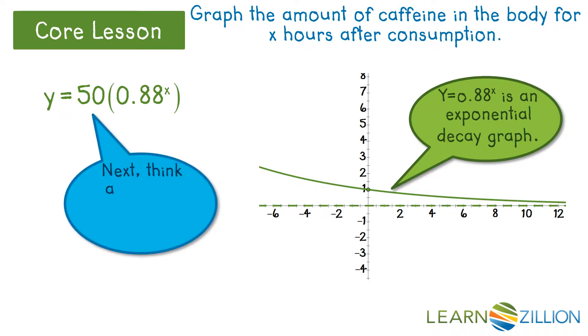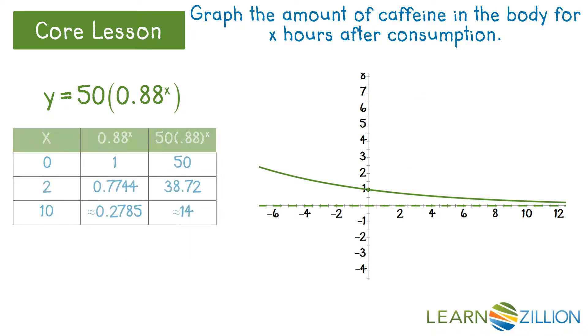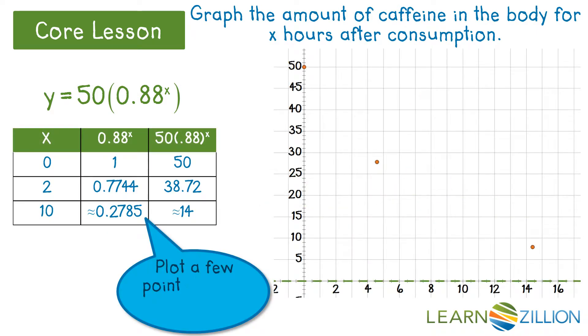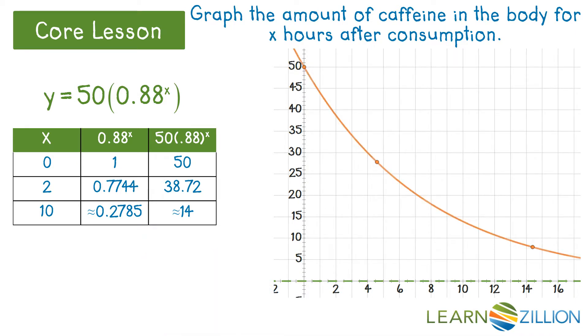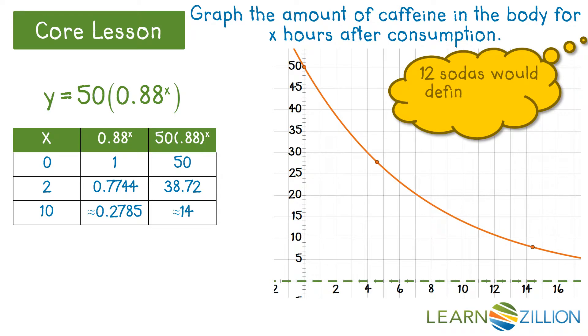Next, think about the vertical stretch by a factor of 50. We can plot a few points to increase our accuracy and draw a smooth curve. If this is 1 soda, 12 would definitely be a bad idea.